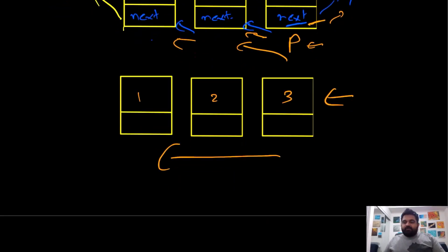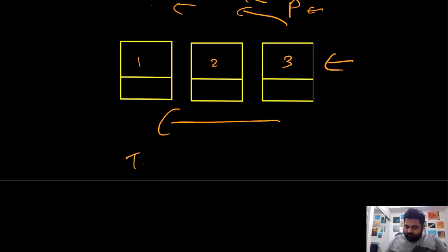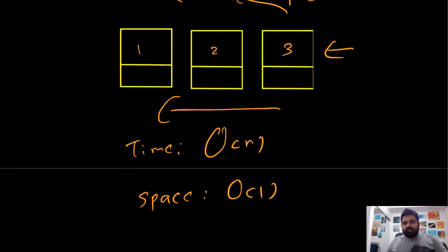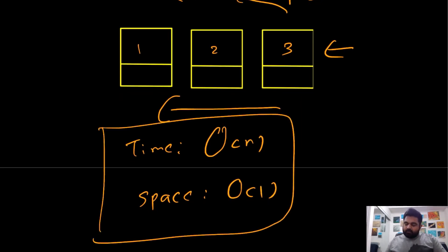If we consider the time and space complexity, the time complexity for this would be O(N) and the space complexity would be O(1), because at any given position all we have to do is keep track of a couple of variables, nothing more than that. And that should take care of all the scenarios.